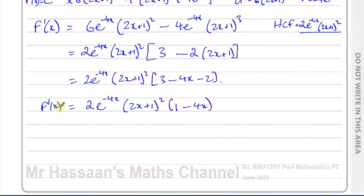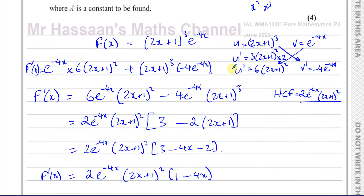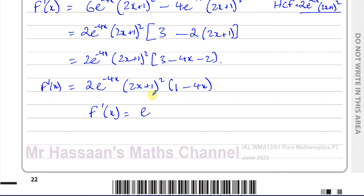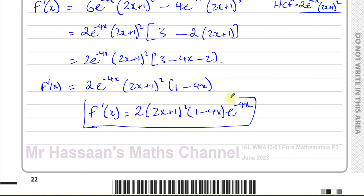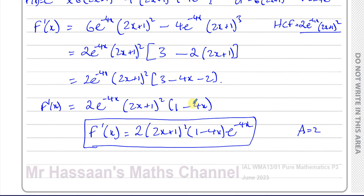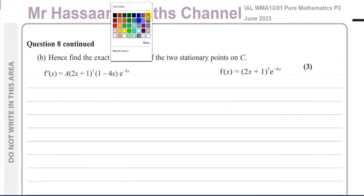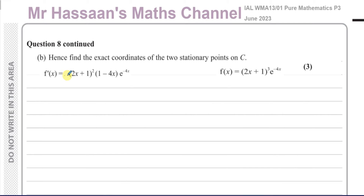So that's exactly what we had to show, with a equal to 2. That's the answer to part a, using the product rule and chain rule together. Now for part b: we've found a equals 2, so we substitute that in. The question says hence, meaning using this result, find the exact coordinates of the two stationary points on C.